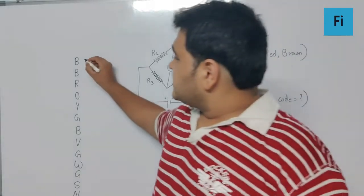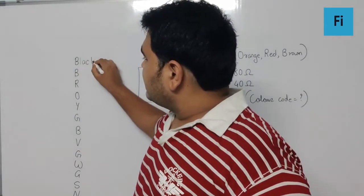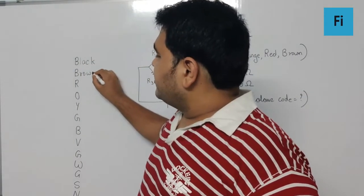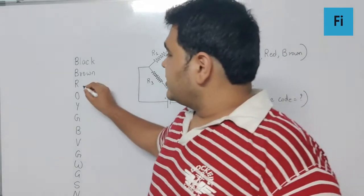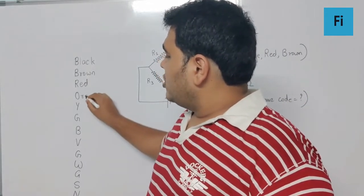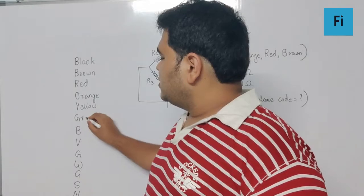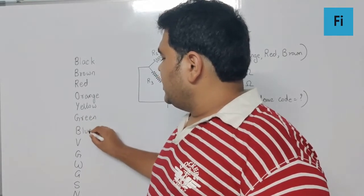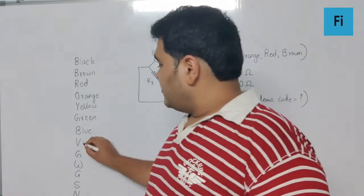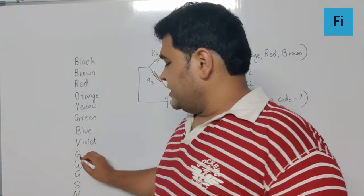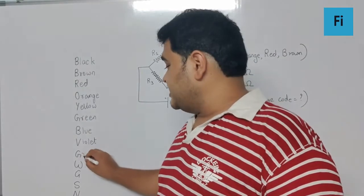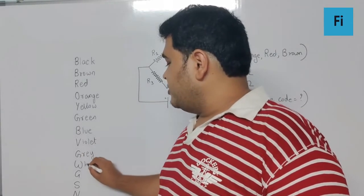The first B stands for black, the second one stands for brown, the third stands for red, O orange, Y yellow.